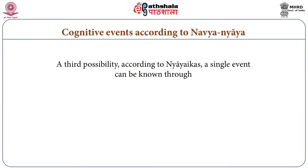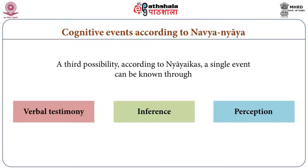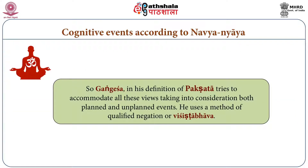There is one more case possible. According to Naiyayikas, a single thing can be known through inference, through verbal testimony, and through perception. So if something is already known through verbal testimony, we can also infer it. This is a case of a planned cognitive event. Gangesh, while discussing Pakshata, tries to accommodate all these views — planned and unplanned cognitive episodes — in forming his definition of Pakshata.